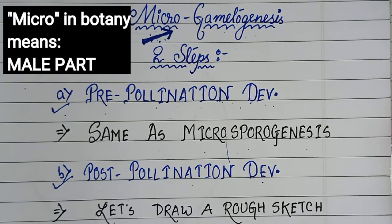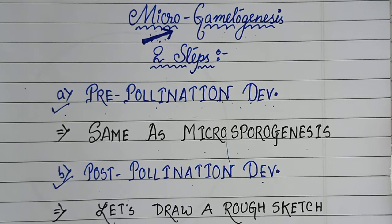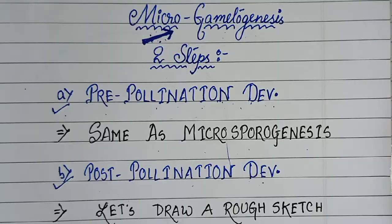In my previous videos I have already mentioned that when the term 'micro' comes, you have to relate it with the male part. The process of formation of male gamete from the pollen grain is called micro gametogenesis — the process by which male gamete is formed from the pollen grain in plants.